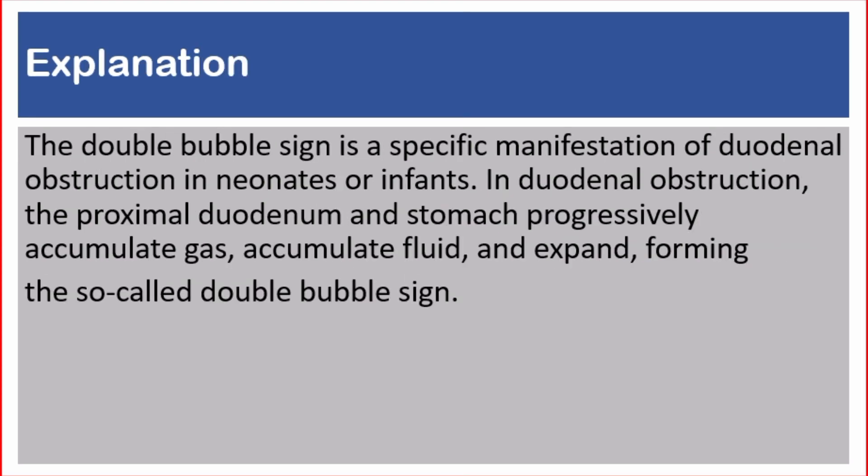Explanation. The double bubble sign is a specific manifestation of duodenal obstruction in neonates or infants. In duodenal obstruction, the proximal duodenum and stomach progressively accumulate gas, accumulate fluid, and expand, forming the so-called double bubble sign.